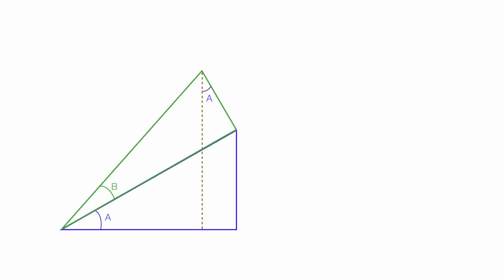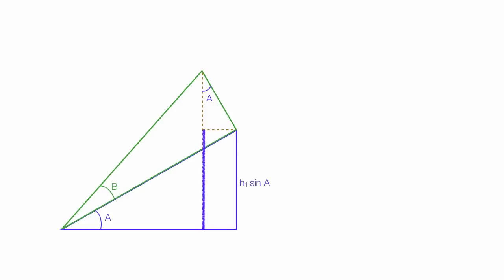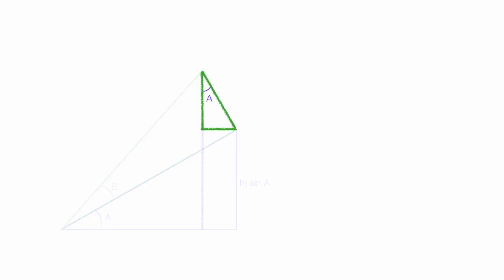The length of the bottom part of that dotted line — the blue line right there — we already know, and that's h1 sine a. The green line is a little different. The line we want to know is the adjacent side to the angle a, and we already know the length of the hypotenuse side, which is h2 sine b.